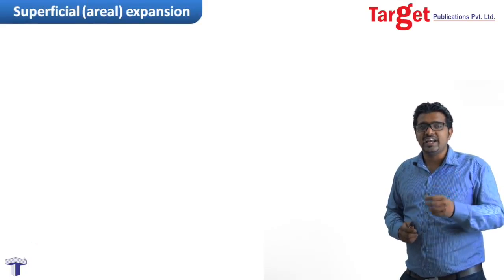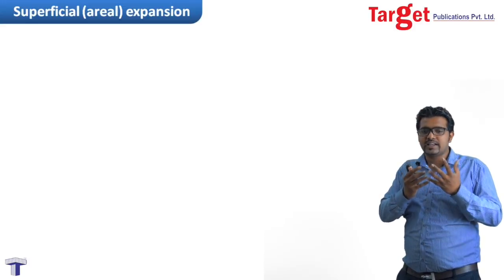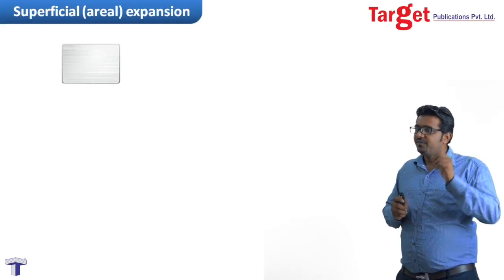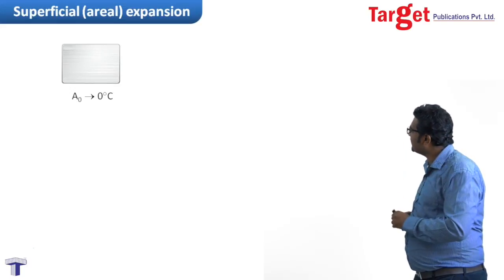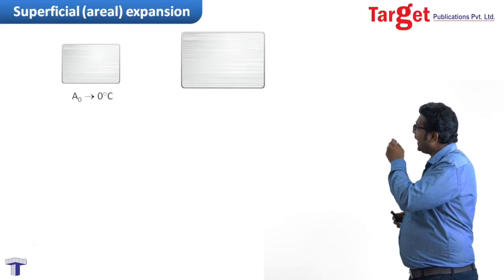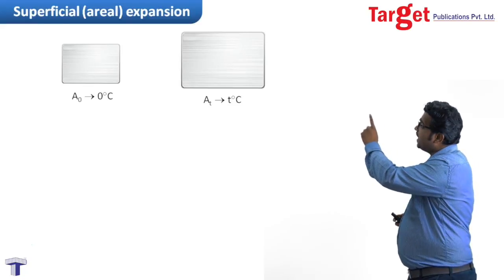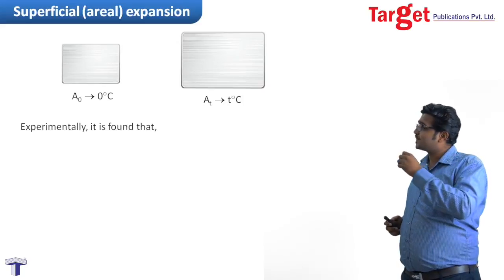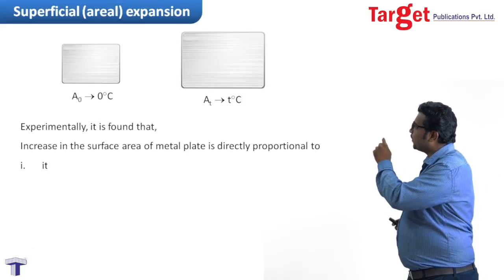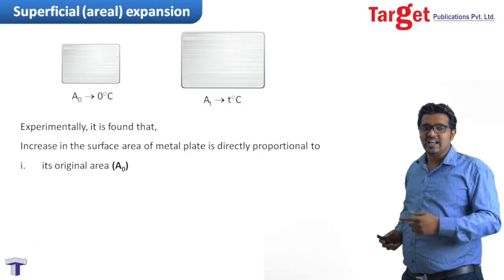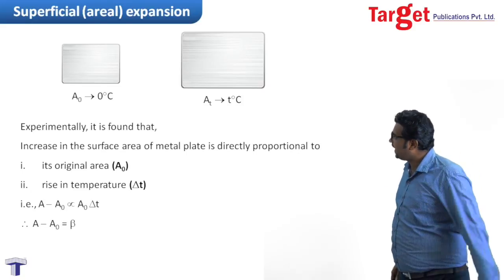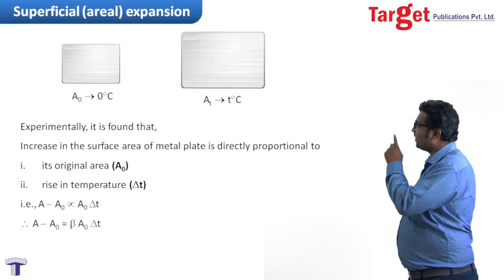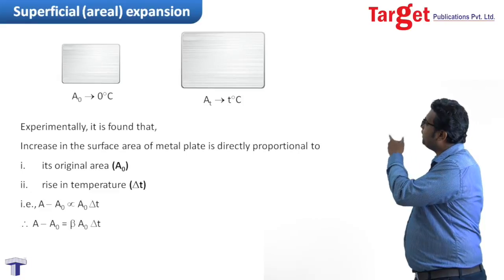Moving ahead for Superficial Expansion, also known as Areal Expansion. Let us consider an example of a metal plate. A metal plate, when heated, expands in its area. We consider a metal plate with area A₀ at 0°C. When expanding, it becomes A at T°C. Here, A is the final area and A₀ is the initial area. Hence, increase in area, A minus A₀, is directly proportional to original area A₀ and rise in temperature delta T.